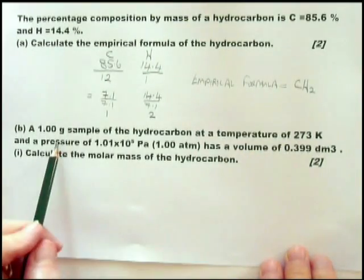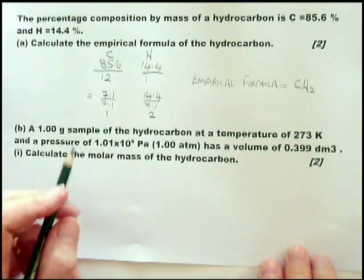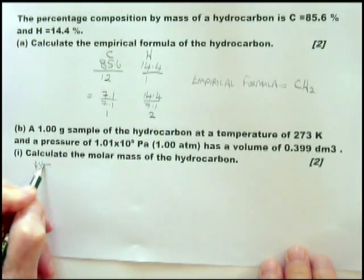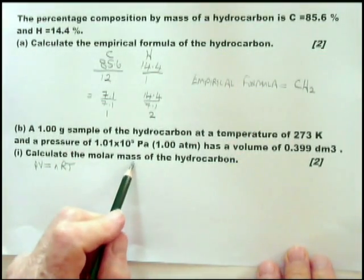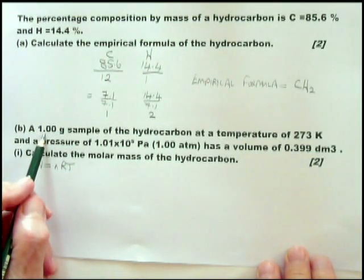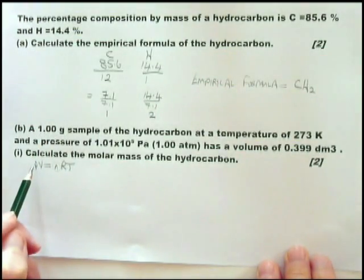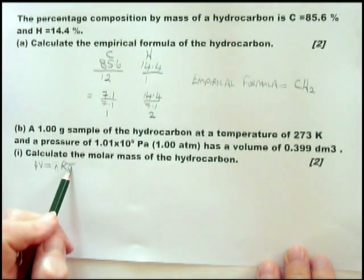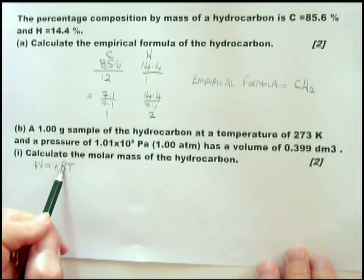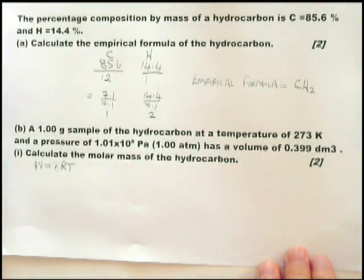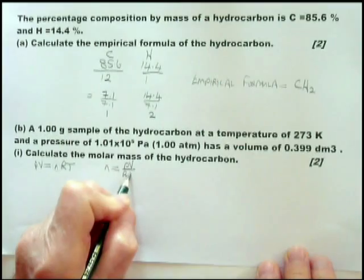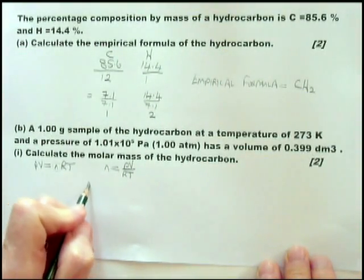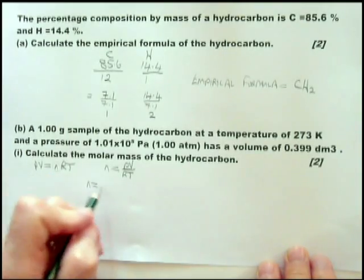Then we go to the next part, which is asking you to calculate the molar mass. As soon as you see temperature, pressure, and volume, you know you're dealing with the equation PV equals nRT. In order to calculate the molar mass given a 1 gram sample, you realize you need to work out what n is. Everything else is given: pressure, volume, temperature, and the R constant. So n equals PV over RT.